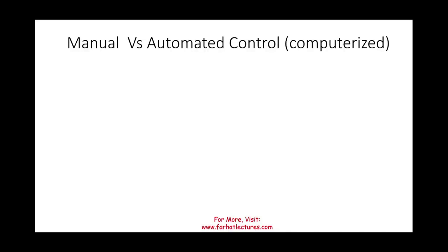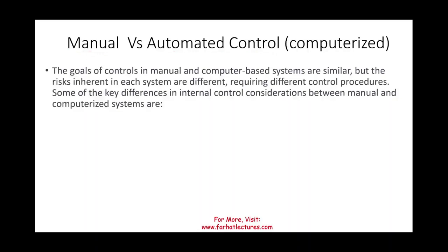Welcome to the session in which we look at manual versus automated or computerized systems of control. The goal for both an automated system and a manual system are the same, but the risks inherent in each system are different because the control procedures are different. We're going to discuss the key differences and summarize them into the following categories.